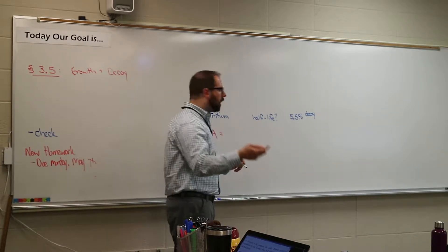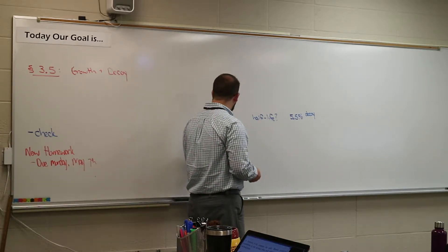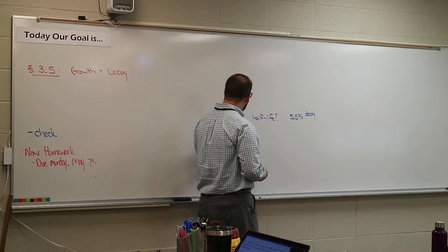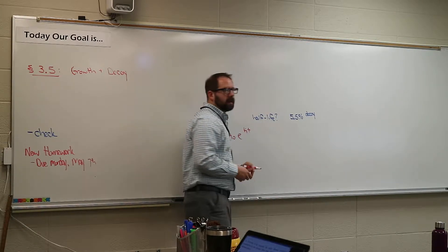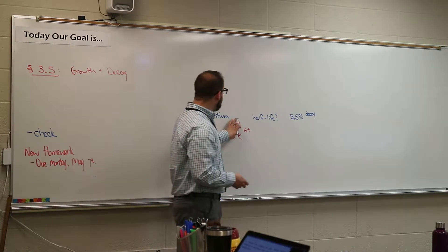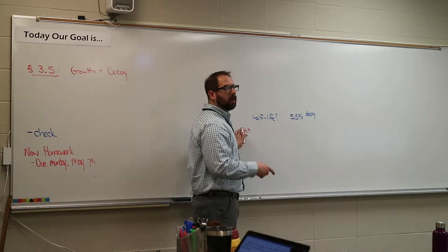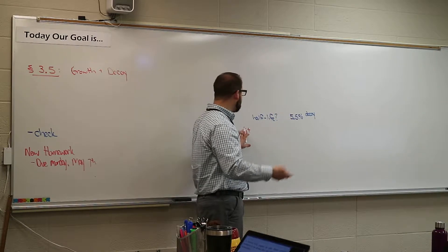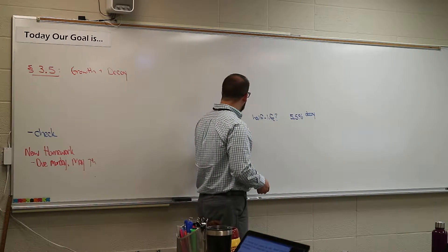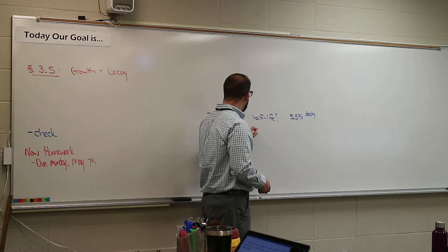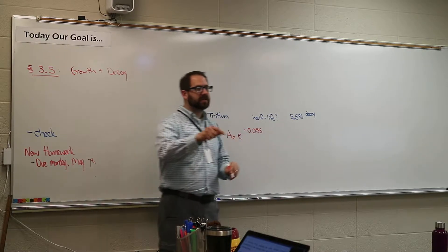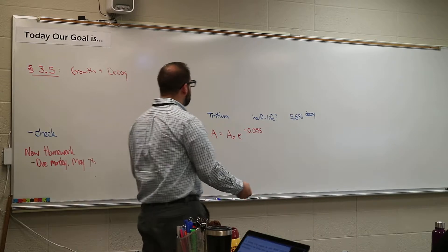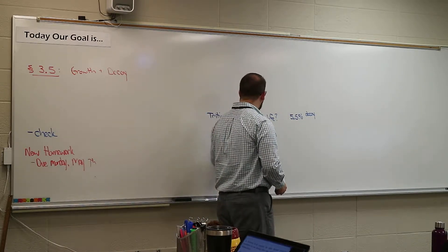The formula is A equals A-zero times e to the rate times t. The rate, which is k — if it's going up in population use positive numbers, if it's going down use negative. In my case I'm using negative 0.055 because it's decaying 5.5 percent over some time span.